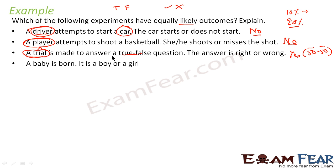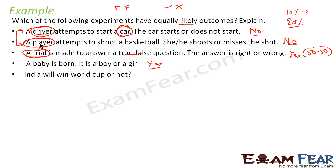Fourth example: a baby is born - is it a boy or a girl? This is also equally likely, because it is independent of any controllable factor. Sometimes you get a boy, sometimes a girl, and this is something we have no control over. We cannot rig this outcome, unlike the first two examples where improving the driver's skill or the car's condition could influence the result.